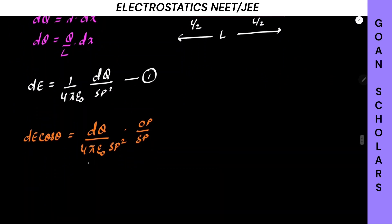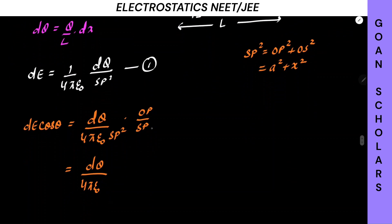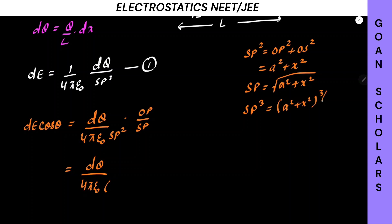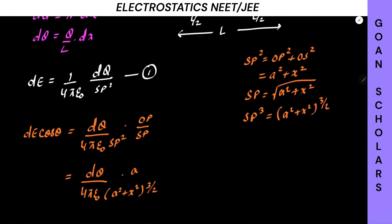Now let's substitute the values. dE cos theta equals dQ/(4πε₀) times SP squared, times OP/SP. What is SP squared? Looking at the triangle, SP² = OP² + OS² = A² + x². So SP equals the square root of A² + x², and SP³ equals (A² + x²)^(3/2). In the numerator we have OP, which is A. So this gives us dQ times A divided by 4πε₀ times (A² + x²)^(3/2).